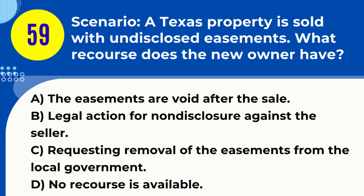Question 59. Scenario: A Texas property is sold with undisclosed easements. What recourse does the new owner have? A. The easements are void after the sale. B. Legal action for nondisclosure against the seller. C. Requesting removal of the easements from the local government. D. No recourse is available. Answer: B. Legal action for nondisclosure against the seller. Explanation: If a property in Texas is sold with undisclosed easements, the new owner may have the option to pursue legal action against the seller for failing to disclose the easements during the transaction.